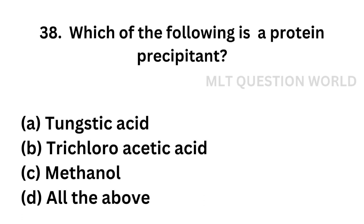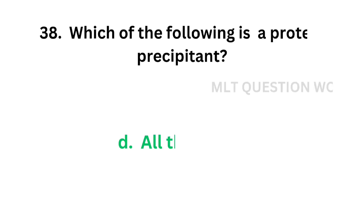Question number 38: Which of the following is a protein precipitant? Option A: tungstic acid, option B: trichloroacetic acid, option C: methanol, option D: all of the above. The correct answer is option D, all of the above. Tungstic acid, trichloroacetic acid, and methanol can all precipitate protein.